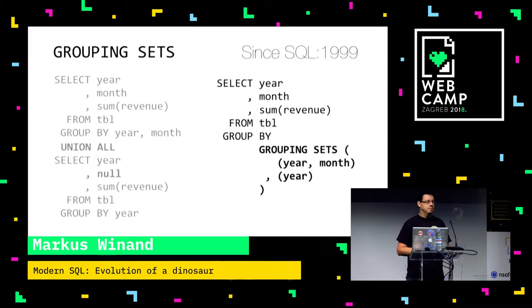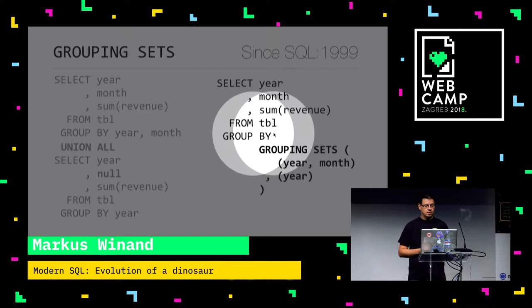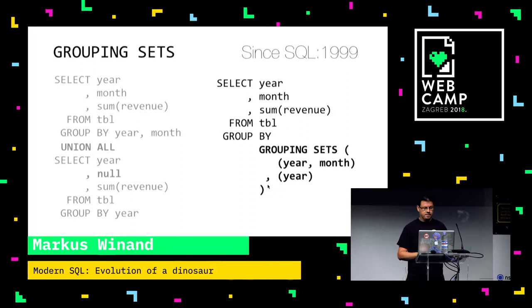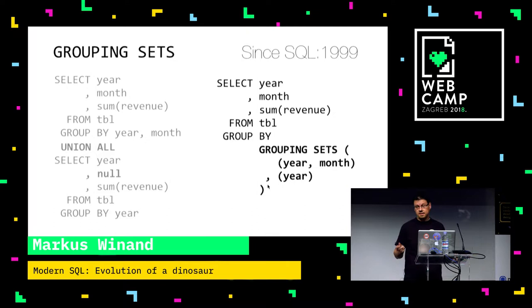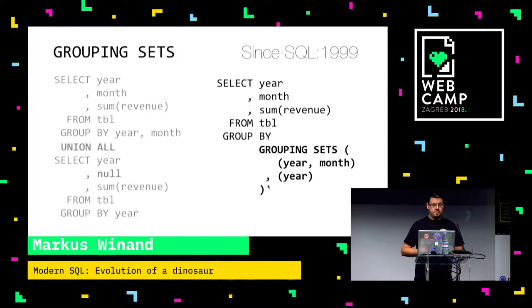This is what it basically looks like. In the GROUP BY clause, you can nowadays have the GROUPING SETS clause. There you can basically say: I would like to have one grouping based on year and month, and then another grouping just on year. If you compare the left and right hand side queries, the result is the same — it's exactly the same. It's just a shortcut for this UNION. And of course at runtime, it's way faster because it's only executed once — basically as fast as one GROUP BY. So this is something really useful.